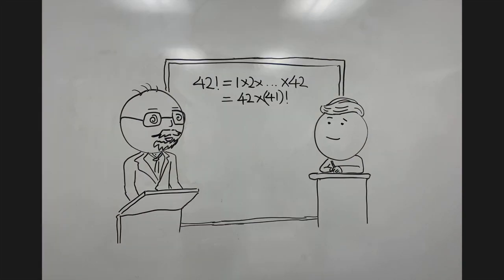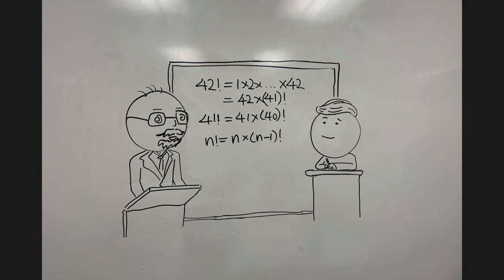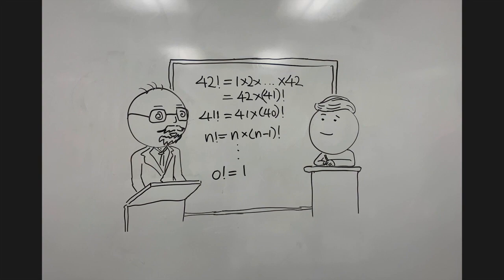The keen observer that you are, it shouldn't take too long to realize that 42 factorial is actually 42 times 41 factorial, and that, in turn, is 41 times 40 factorial. In fact, the factorial of any natural number can be written as n times n minus 1 factorial, and you can go all the way down to 0, where 0 factorial is intuitively 1.